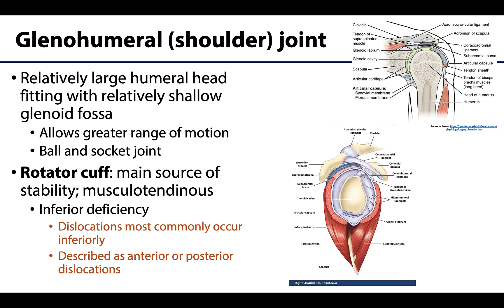Now a bit about the composition of the glenohumeral joint. Part of the reason for the noted mobility is the fit of the articulating bones. You have a relatively large humeral head fitting into a relatively shallow glenoid fossa — they don't fit particularly well together. If there were a tighter fit there would be decreased mobility, as we see in other joints. Almost completely encircling the joint is a musculotendinous ring formed by the muscle bellies and tendons of the rotator cuff muscles.